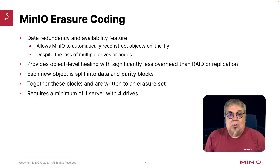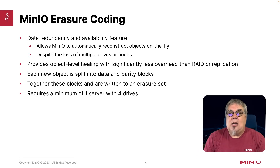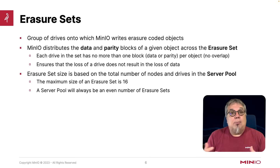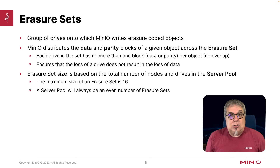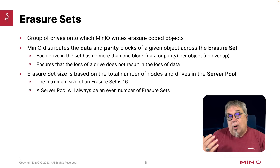So what's an Erasure Set? In order to get an Erasure Set, you have to have a minimum of one server and four drives — that is the minimum size of your cluster to have any kind of Erasure Coding. An Erasure Set is a group of drives onto which MinIO writes your Erasure Coded object — all your data and parity blocks. MinIO distributes those data and parity blocks across your entire Erasure Set, and each drive is guaranteed to hold no more than one block with no overlap.